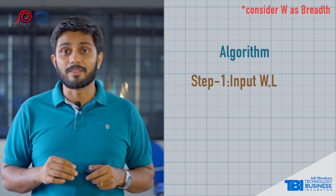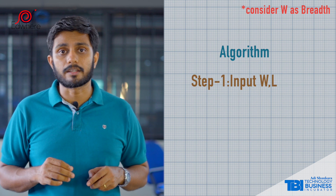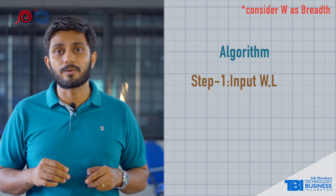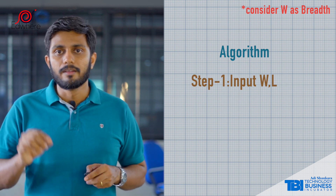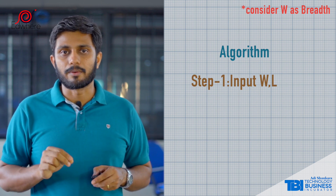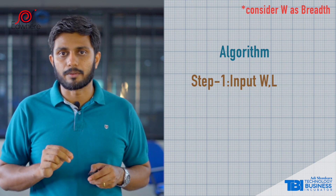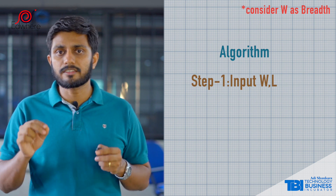Step 1 — from an algorithm perspective. First, we have a length and a breadth. So, we have a length and breadth as our inputs.